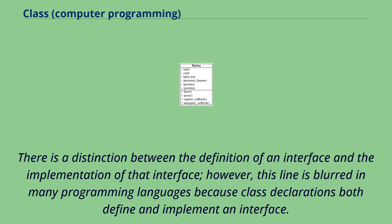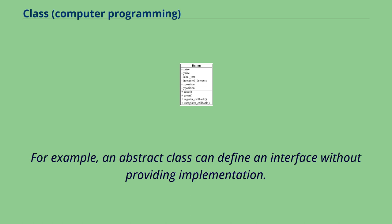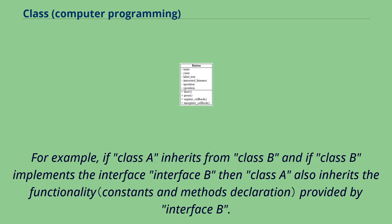There is a distinction between the definition of an interface and the implementation of that interface. However, this line is blurred in many programming languages because class declarations both define and implement an interface. Some languages provide features that separate interface and implementation. For example, an abstract class can define an interface without providing implementation. Languages that support class inheritance also allow classes to inherit interfaces from the classes that they are derived from. For example, if class A inherits from class B and if class B implements interface B, then class A also inherits the functionality provided by interface B.